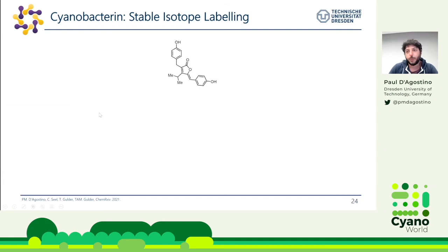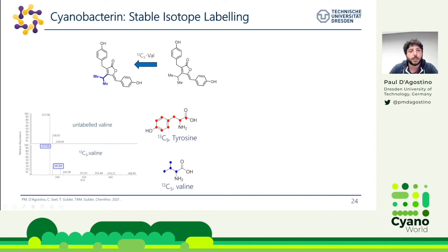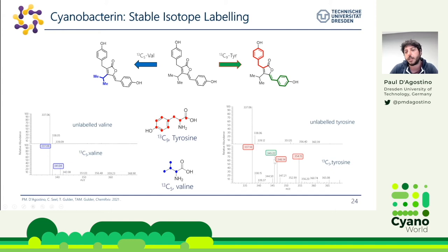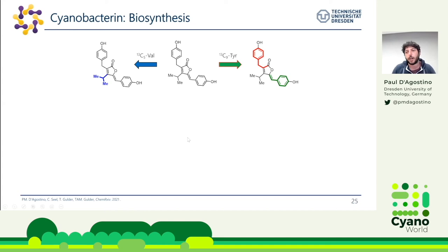We knew we had the genes but still had no idea what was really making the molecule. As we thought tyrosine and valine might be building blocks, we fed carbon-labeled tyrosine and valine to our expression cultures. In the valine-fed cultures, we found a +4 mass shift corresponding to incorporation of valine. In the tyrosine-fed cultures, we found +8, +9, and +17 mass shifts, corresponding to one tyrosine, two tyrosines, and both tyrosines incorporated. We now knew the building blocks required for the biosynthesis.